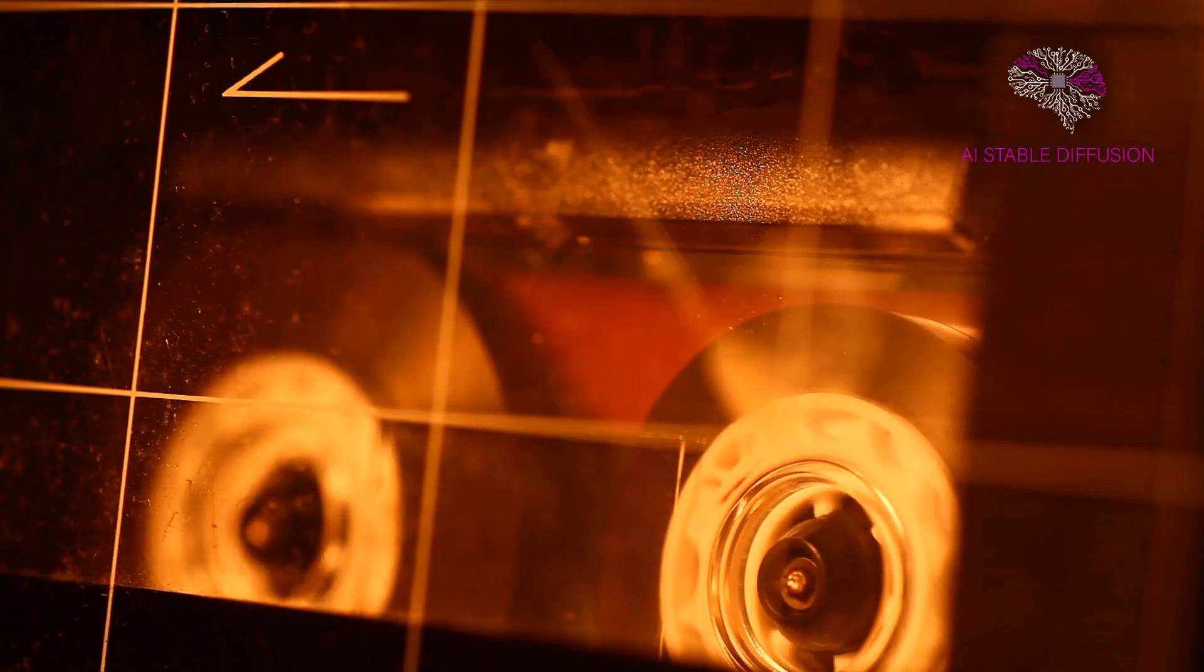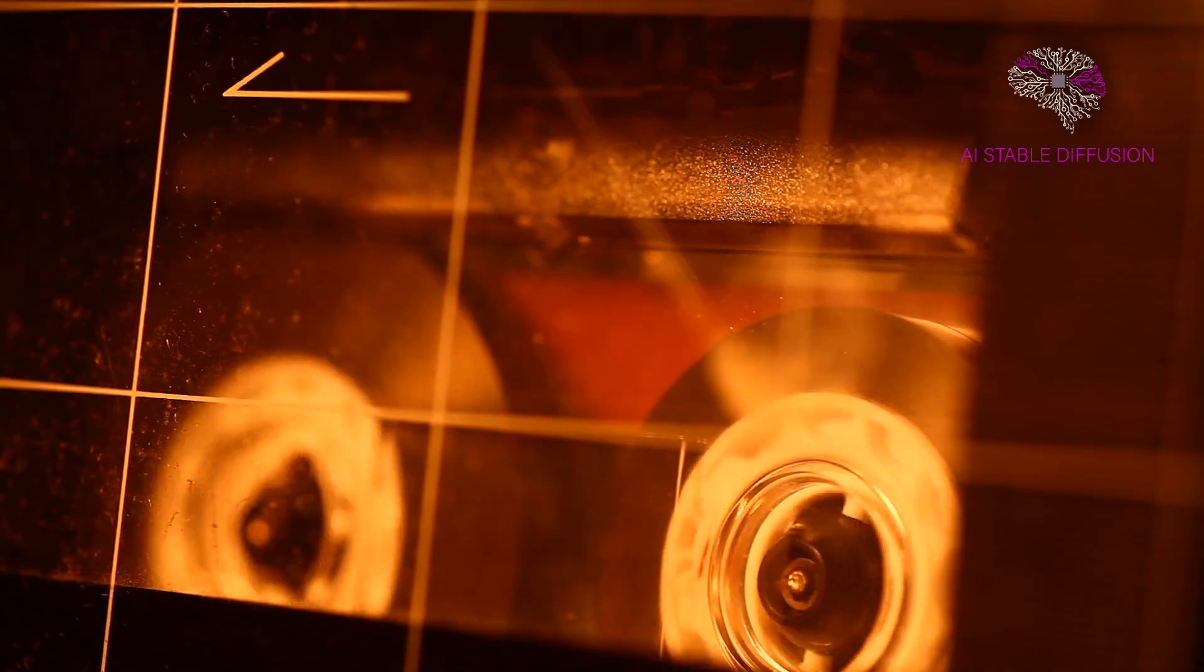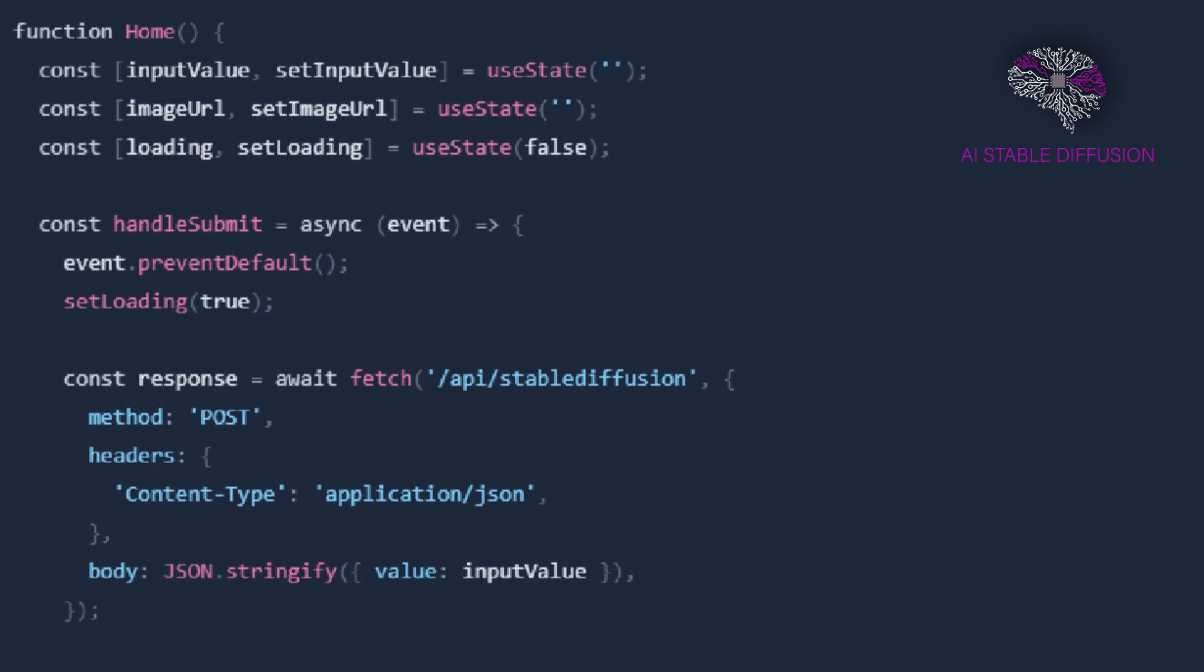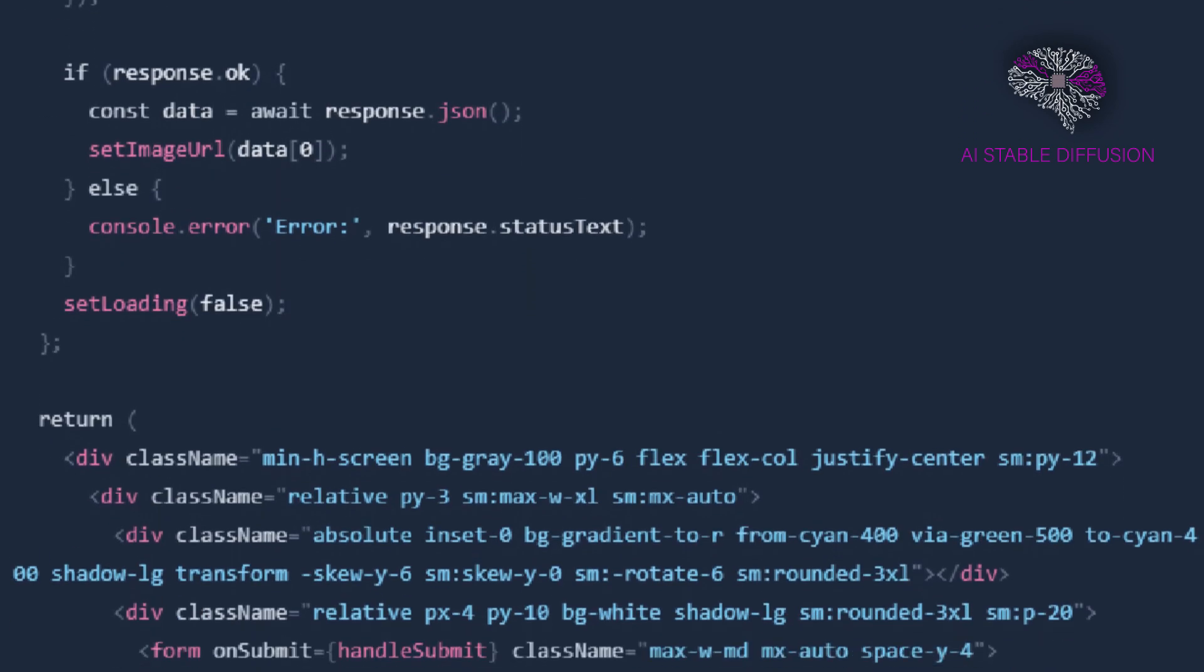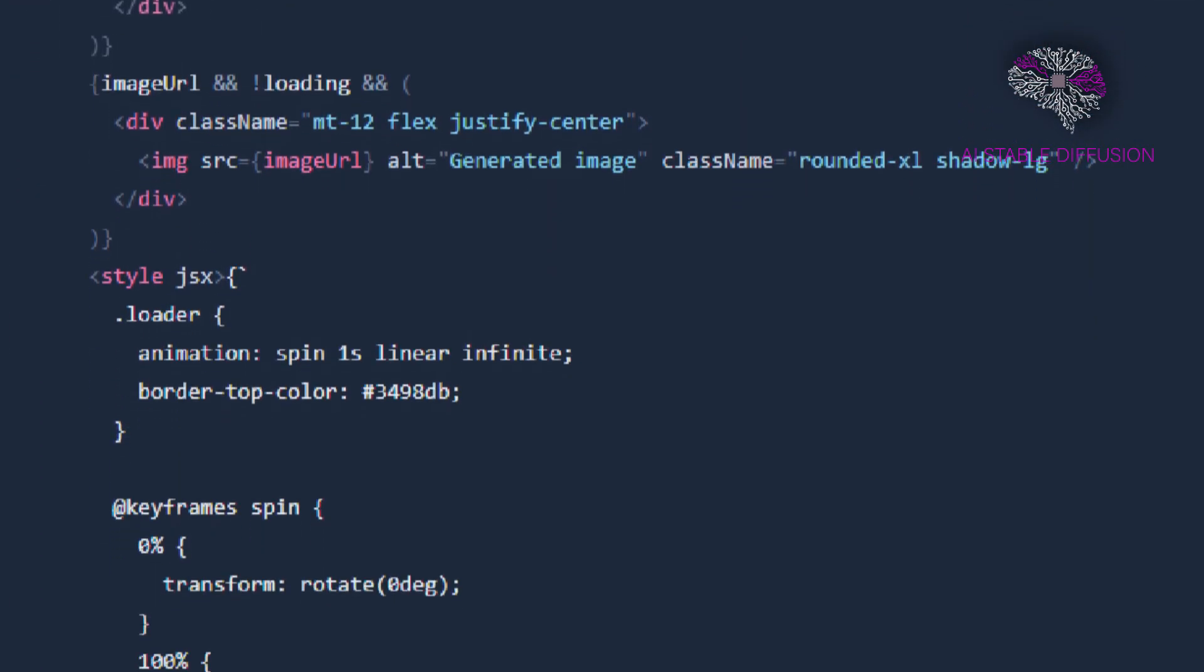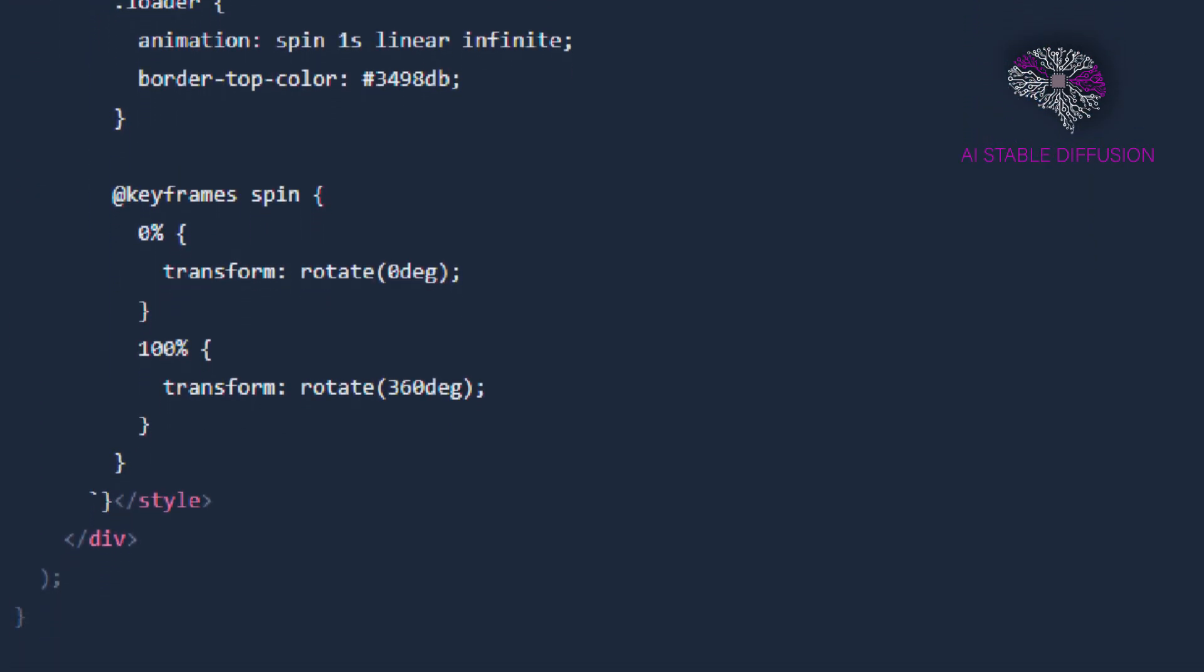Now let's develop a form for users to provide their text prompts before creating the image generation form. Add the following code to your pages slash index.tsx file. By entering a text prompt and submitting the form, users can generate an image. While the image is being generated, a spinning loading indicator is also displayed.